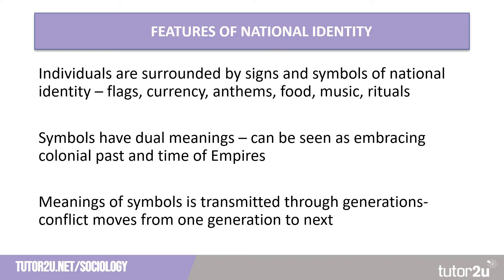However, this can be problematic for some, as symbols have dual or even multiple meanings based upon how an individual interprets them. Flags and statues are often perceived as embracing a colonial past and the time of empire, and in changing times can be seen as a sign of oppression for some in society. For example, when the statue of Edward Colston in Bristol was thrown into the River Severn during the Black Lives Matter protests, Colston's statue was seen as a representation of the oppression of the transatlantic slave trade, as Colston's fortune had come from the slave trade.